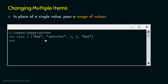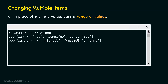For this purpose, let's type the command: list[2:4] equal to Michael, Anderson, and Emma. We want to replace these two items by these three items. We must pass 2 colon 4 here because the index of the first item is two and the index of the second item is three. It is always last index minus one, so we are referring to items from index two to index three, meaning these two items will be replaced by the three strings.